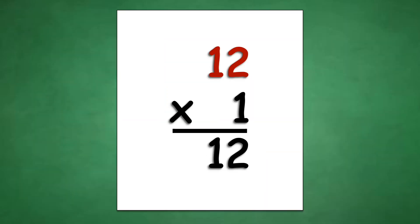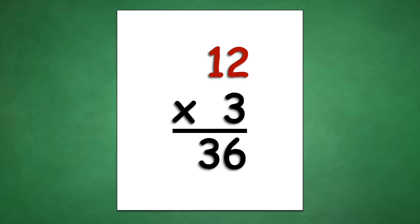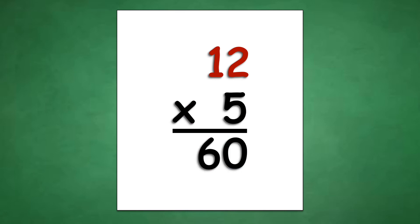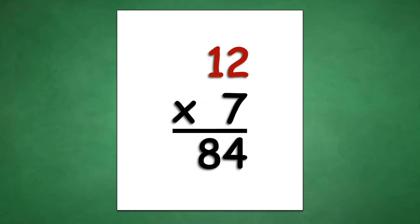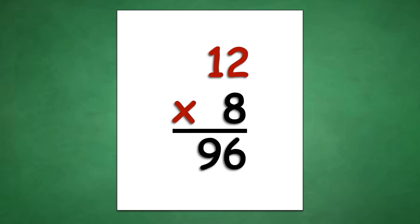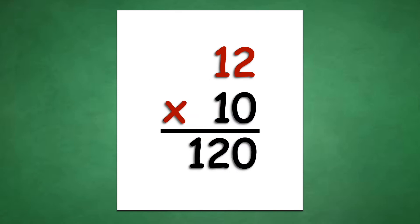Table of 12: 12 times 1 equals 12, 12 times 2 equals 24, 12 times 3 equals 36, 12 times 4 equals 48, 12 times 5 equals 60, 12 times 6 equals 72, 12 times 7 equals 84, 12 times 8 equals 96, 12 times 9 equals 108, 12 times 10 equals 120.